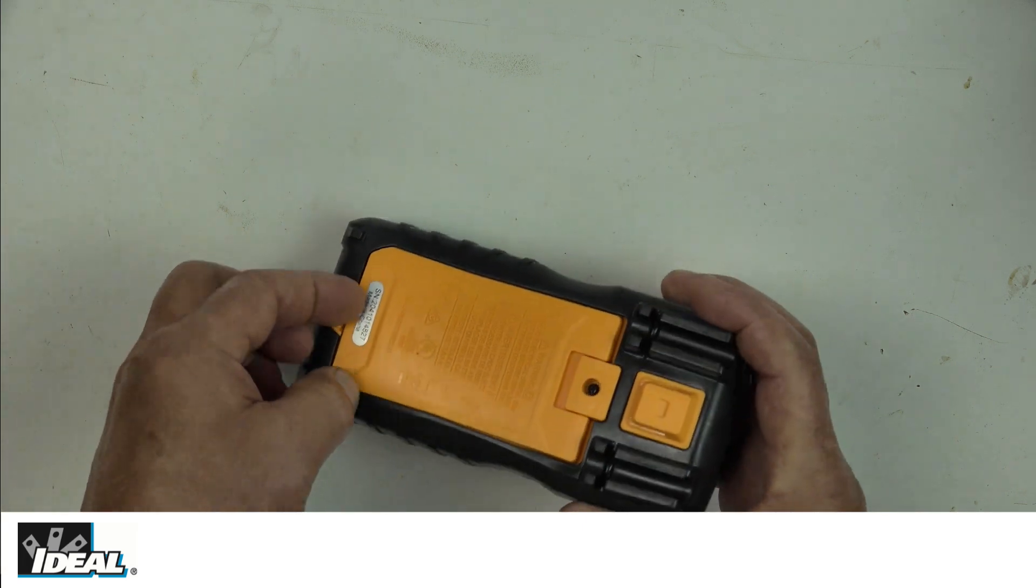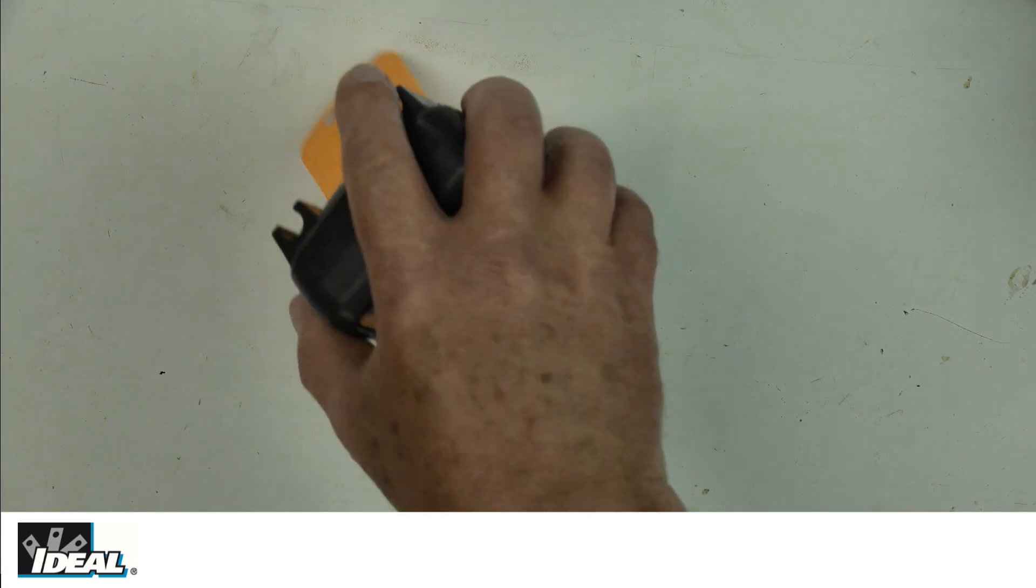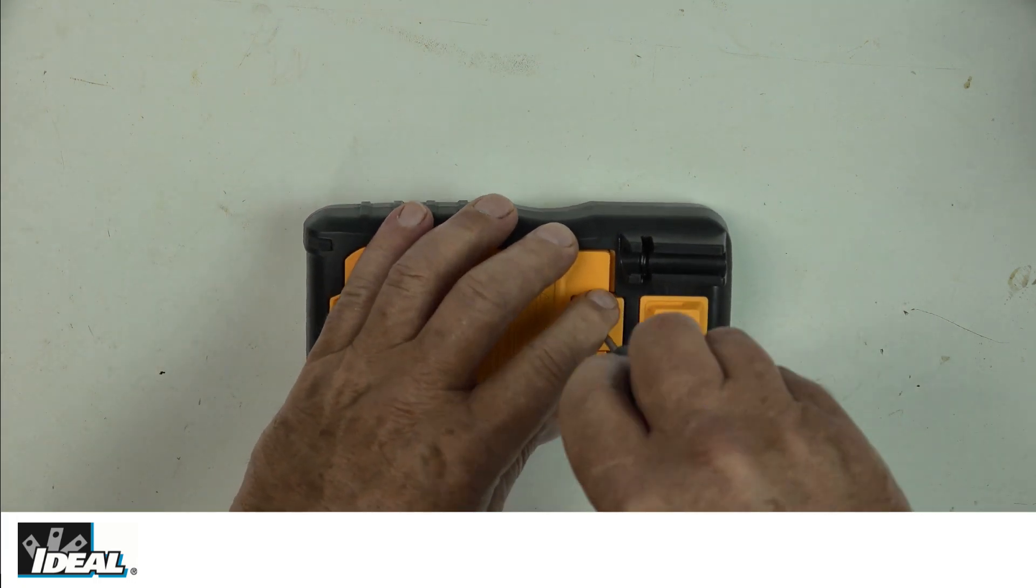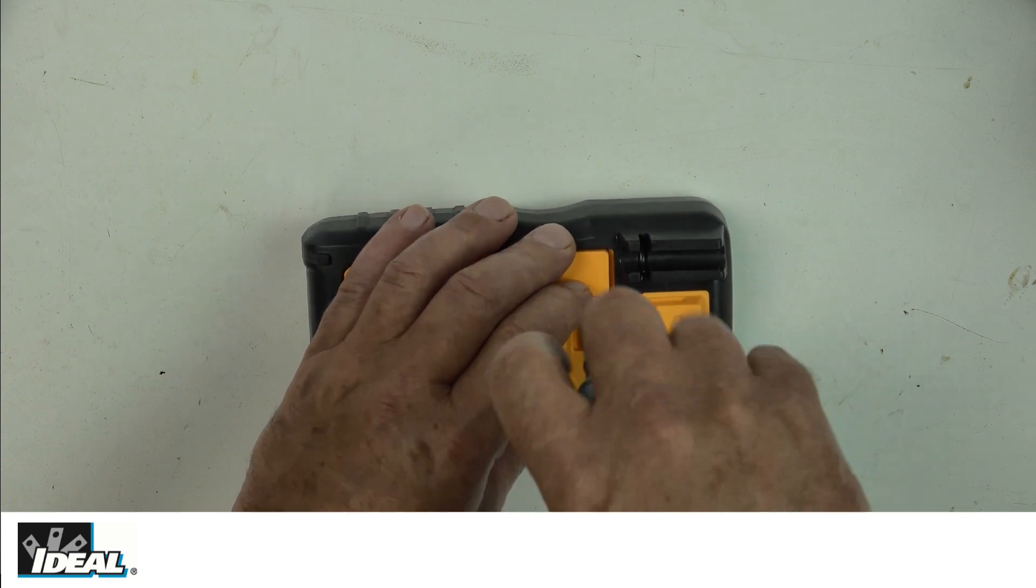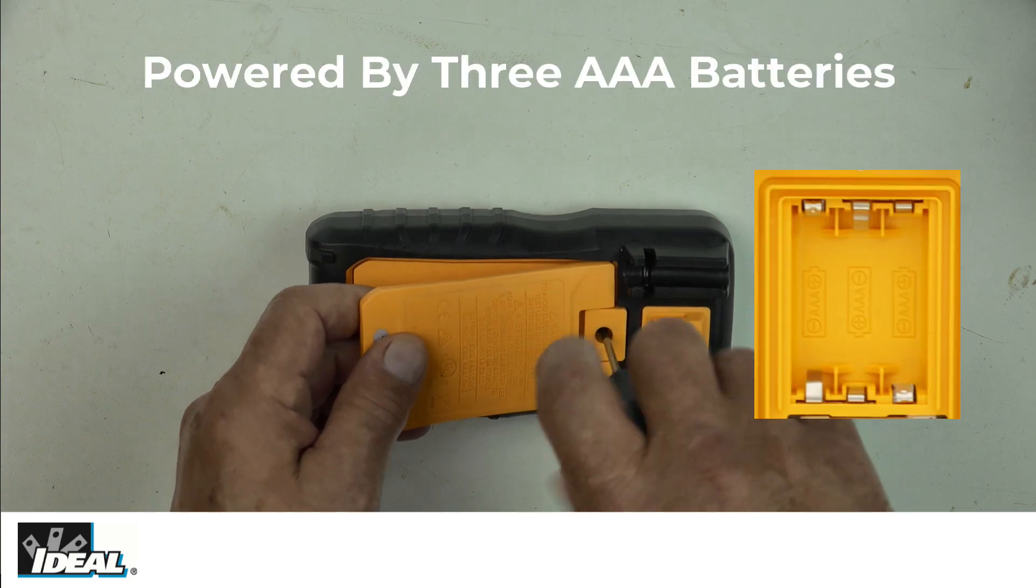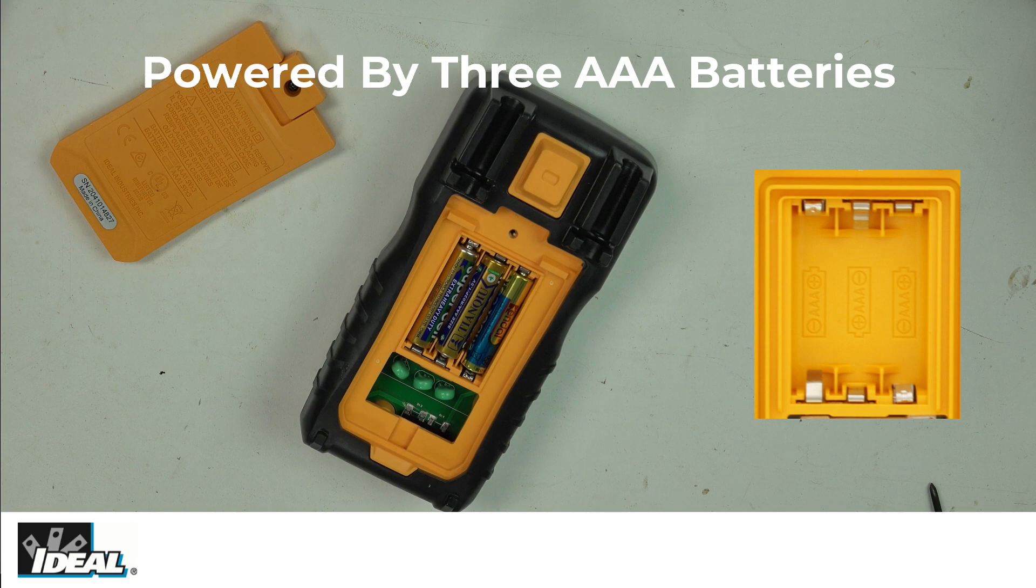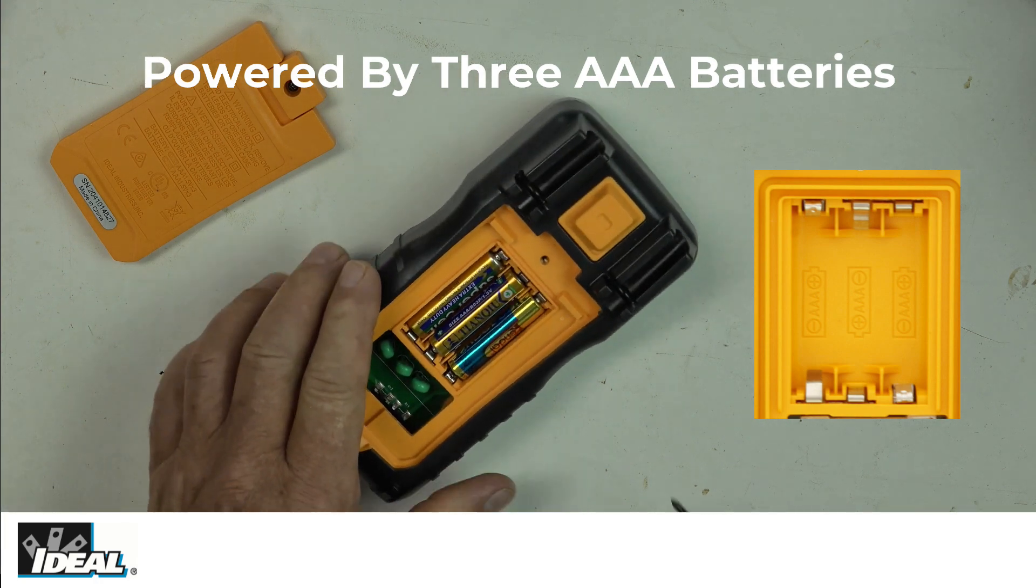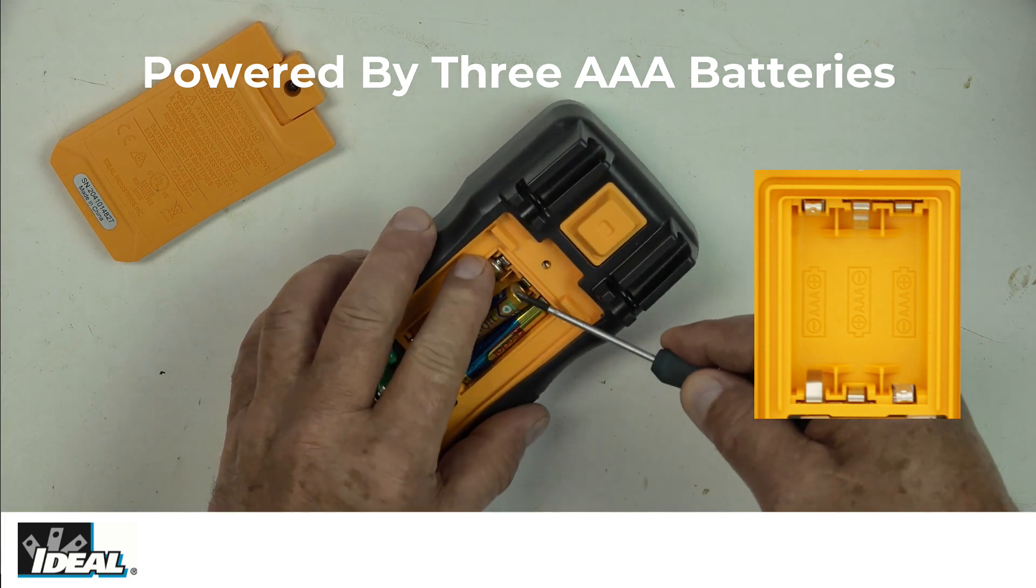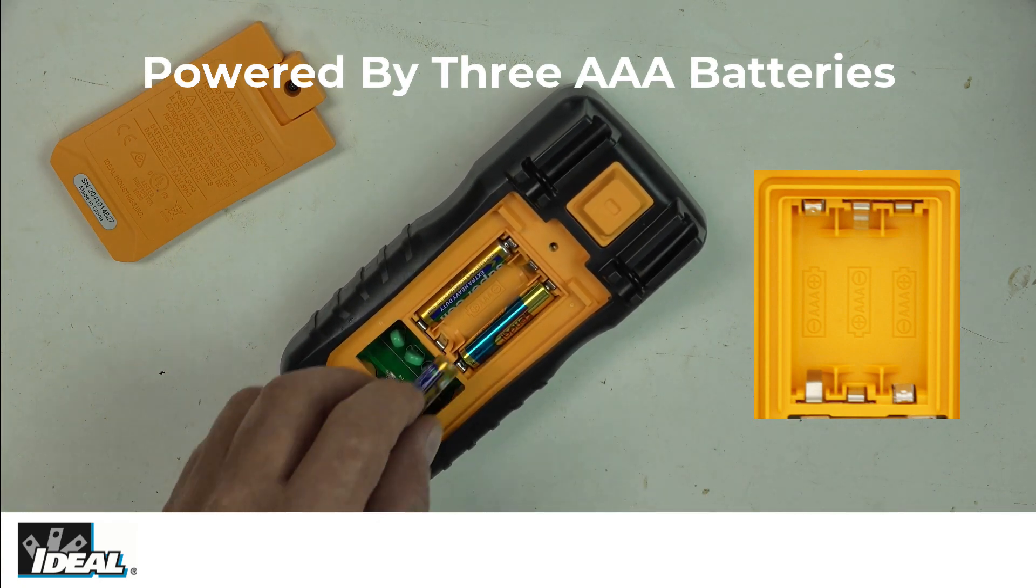The tester also has a kickstand on the back that you can use to stand the tester up during testing. I'm going to remove this battery cover. Anytime you remove the battery cover, do not try to use the tester to make any measurements. Always make sure the battery cover is on if you're going to use it. Here's the battery compartment with a legend showing how to orient your batteries properly.